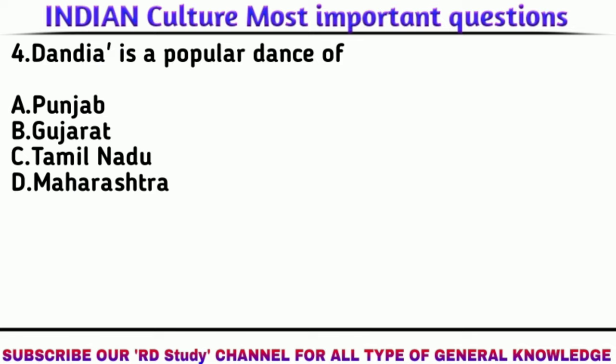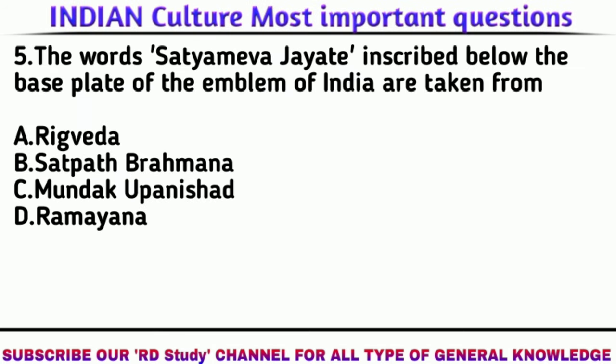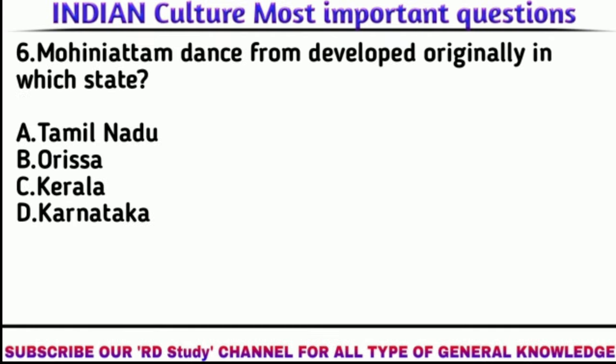Answer: Gujarat. Question 5: The words 'Satyameva Jayate' inscribed below the base plate of the emblem of India are taken from? Answer: Mundaka Upanishad. Question 6: Mohini Attam dance form was originally developed in which state?